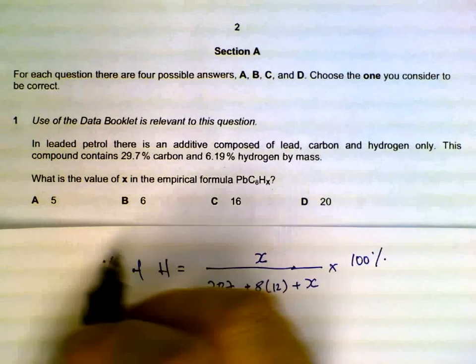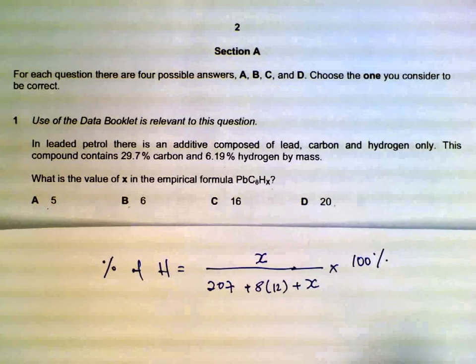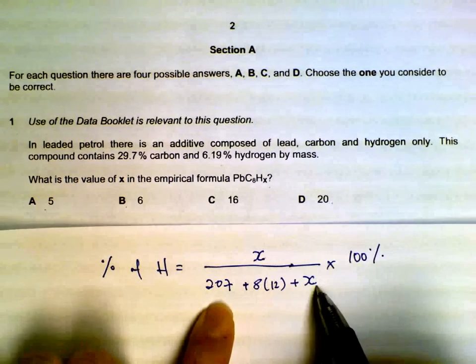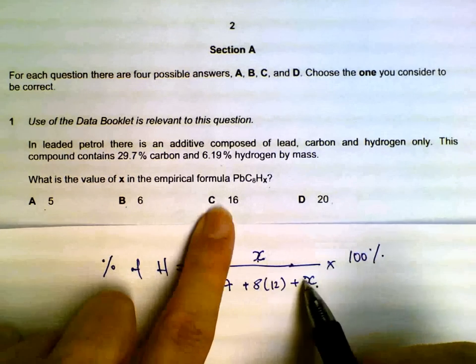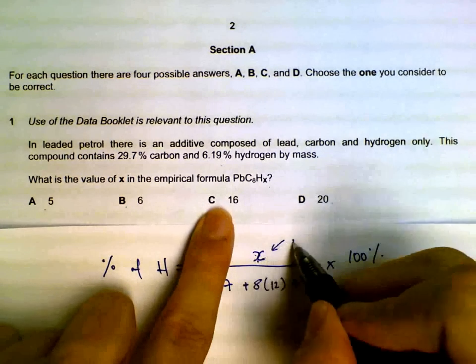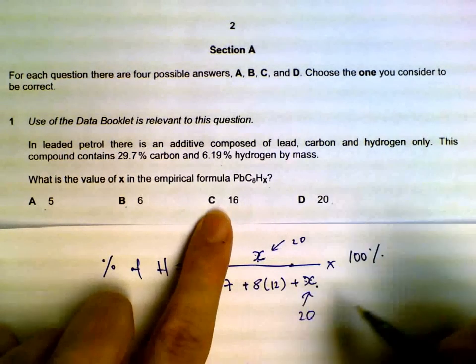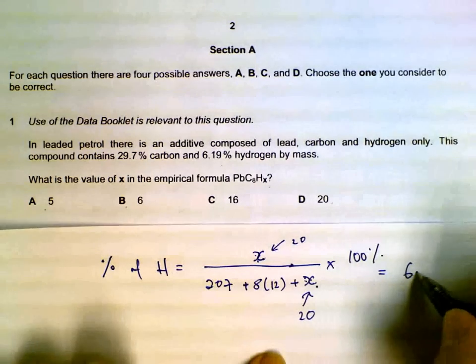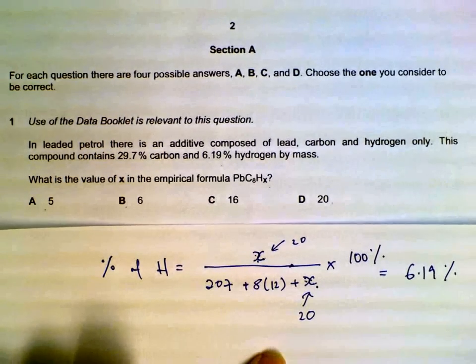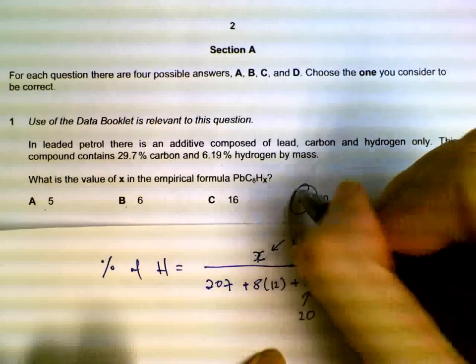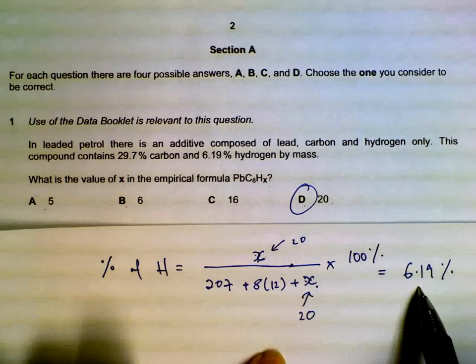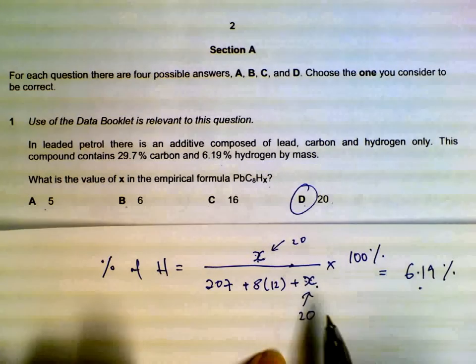So this is a fraction of hydrogen, and then multiplied by 100 percent. What you can do is you can substitute the options into x here - put five, six, 16, or 20, and see which of these combinations will give you 6.19 percent and that will be your x. In this case, if you try until 20, you will see that it gives us the correct percentage.